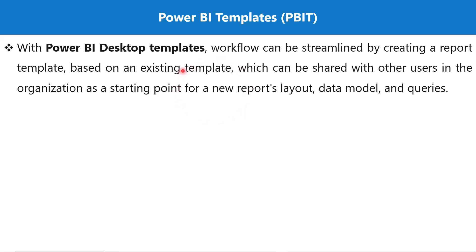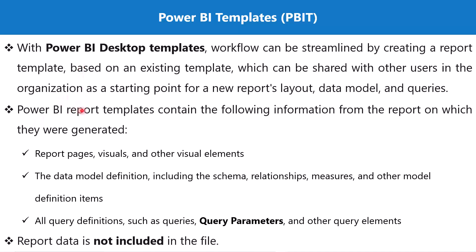The Power BI Desktop file includes everything related to the data model, including the actual data. But if you want to save the file as a template to be used by another user, you can save it as a template file. When saved as a template, it contains the report pages, visuals and visual elements, the data model definition including schema, relationships, measures, and all query definitions such as queries, query parameters, and other query elements. Importantly, the actual data is not included in the file — you have a data model schema but no data.